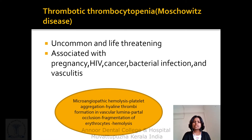Thrombotic thrombocytopenic purpura, known as Moschcowitz disease, is uncommon and life-threatening, associated with pregnancy, HIV, cancer, bacterial infection, and vasculitis. It is characterized by microangiopathic hemolysis, platelet aggregation, hyaline thrombi formation in vascular lumens, partial occlusion of vessels, fragmentation of erythrocytes, and hemolysis.